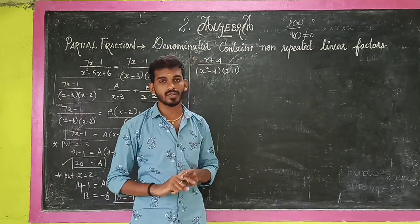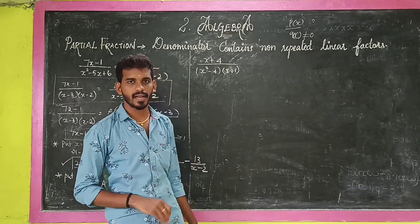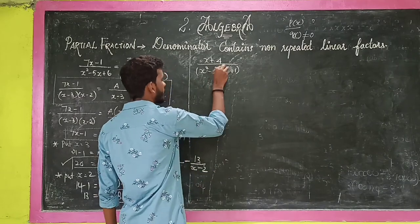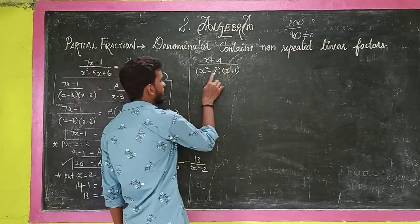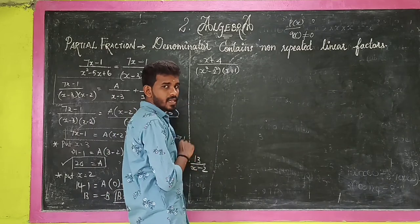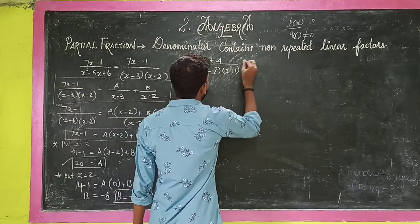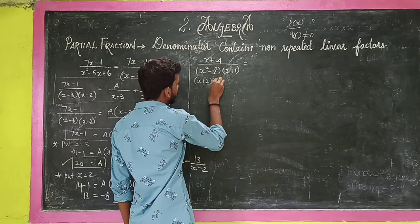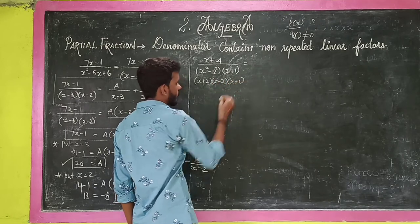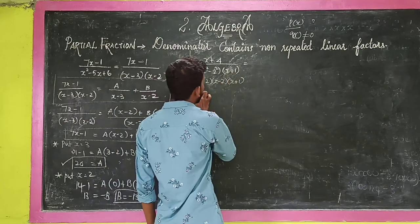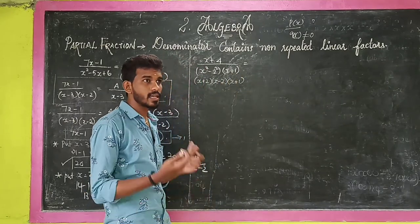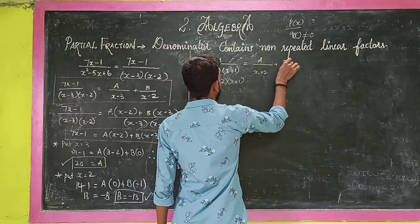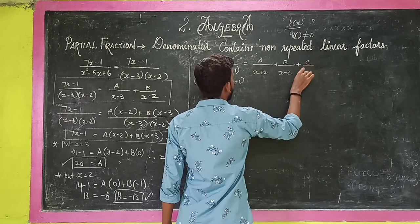Now look at the next question: (x plus 4) divided by (x squared minus 4). Now x squared minus 4 can be written as x squared minus 2 squared, which equals (x plus 2)(x minus 2). So the denominator factors into (x plus 2)(x minus 2)(x plus 1).